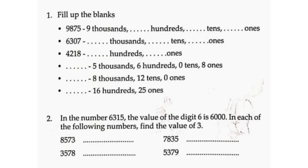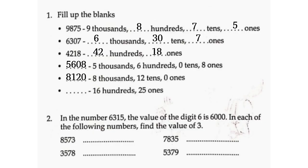Fill up the blanks: 9,875 has 9,800 hundreds, 7 tens, 5 ones. 6,307 has 6,030 tens and 7 ones. 4,218 stays as 4,218. 5,680 has 0 tens and 8 ones. 5,608 and 8,012.